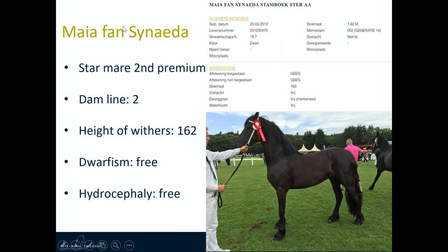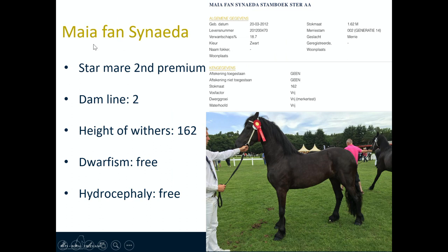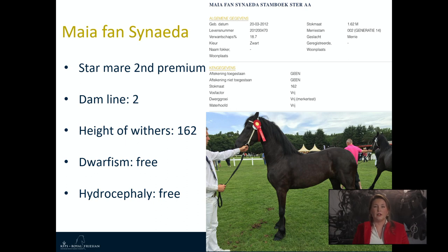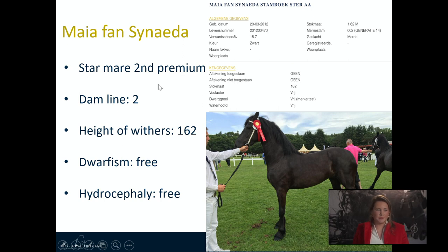Here is some extra information about Maia. She is a star mare, second premium, from dam line 2 — one of the first dam lines of the stud book. Her height of withers is 162 cm. Her carrier status is that she is free from dwarfism and also hydrocephaly. This is all information you can find on the KFPS site.